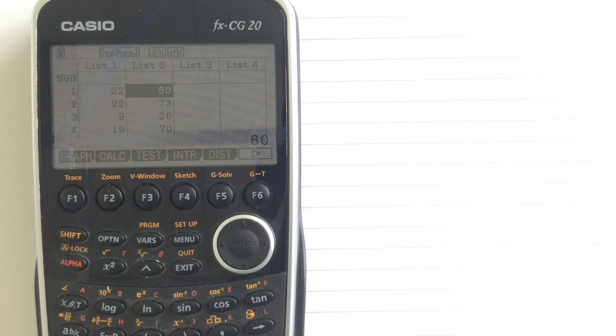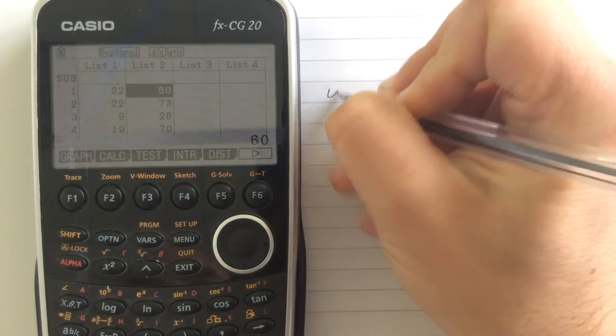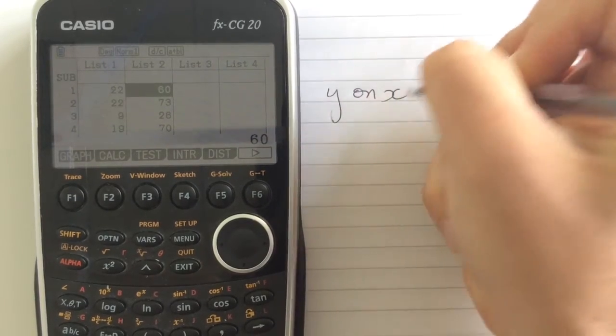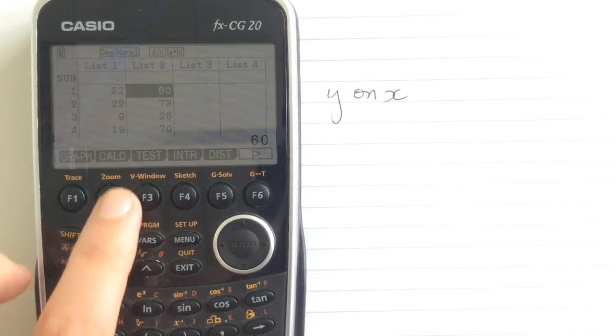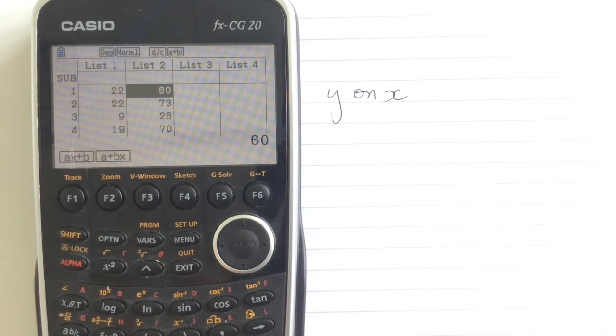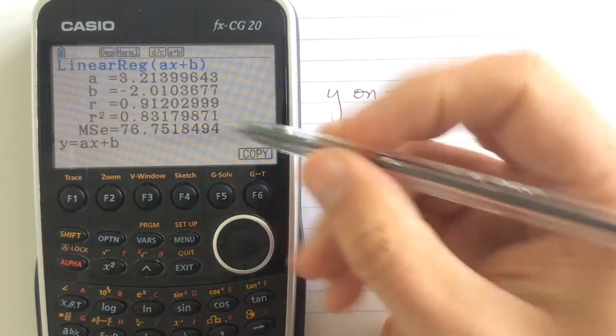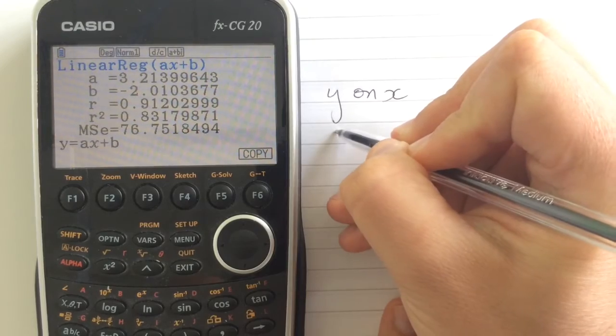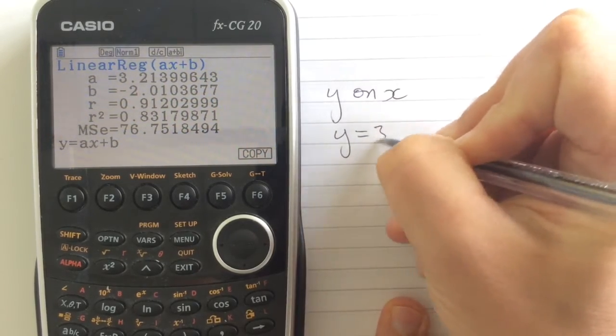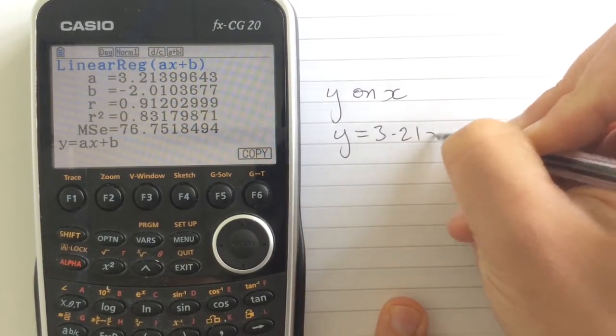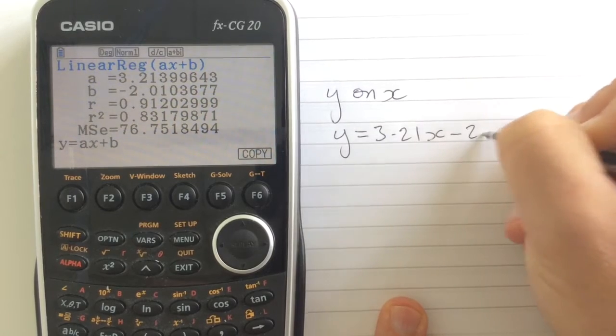They pointed out that of course what we've done is we have found the y on x equation. So where we've done that, we've calculated for this particular set of data that we've got y equals 3.21x minus 2.01.